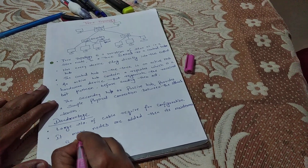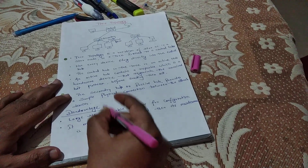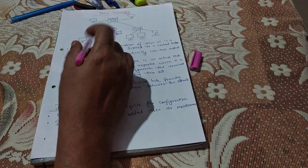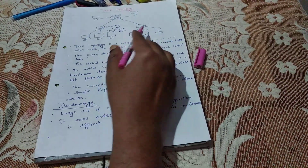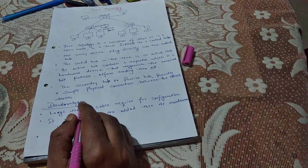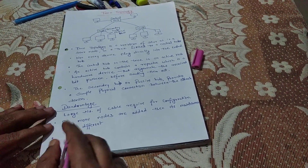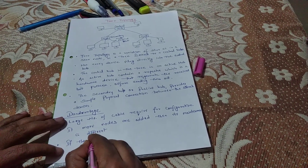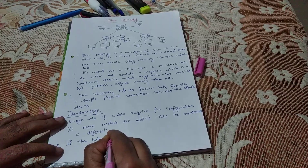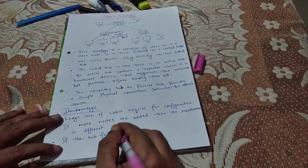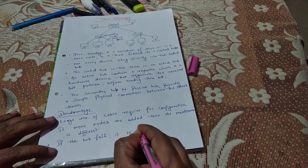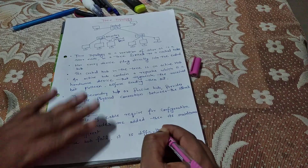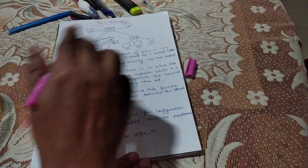Maintenance is difficult. Obviously, if the network becomes more complex, it is difficult to manage maintenance because of the large number of nodes. If any node fails or any hub fails, it is difficult to maintain. Third, if the hub fails, it is difficult to pass data and all the systems may crash.